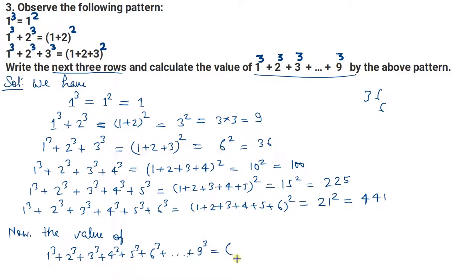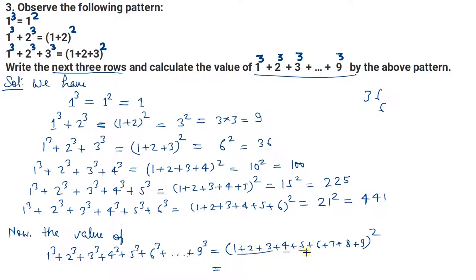According to this pattern, we can write: (1+2+3+4+5+6+7+8+9)². सबको add करते हैं: 1+2=3, +3=6, +4=10, +5=15, +6=21, +7=28, +8=36, +9=45. तो sum है 45, और हमें 45 का square निकालना है।